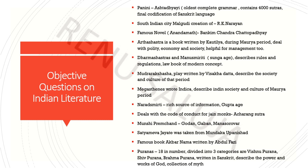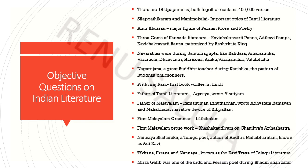पुराण का मतलब होता है इतिहास, जो कि हमारी history को describe करते हैं उस समय के राजाओं और देवी-देवताओं के बारे में बताते हैं। Total 18 major पुराण हैं, और 18 ही minor पुराण हैं। जो major पुराण हैं वो तीन categories में divide हैं — विष्णु पुराण, शिव पुराण, ब्रह्म पुराण। ये सब संस्कृत में ही लिखे गए हैं और power and works of God को describe करते हैं। दोनों मिलकर 4 lakh verses बनाते हैं।